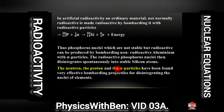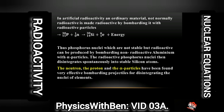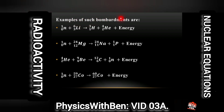The neutron, the proton, and the alpha particle have been found to be very effective bombarding projectiles for disintegrating the nuclei of elements. You need to take this seriously, because the neutron, the proton, and the alpha particle are used to disrupt the nuclei of particles that are not radioactive in nature. Examples of such bombardment are given below.